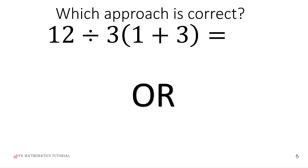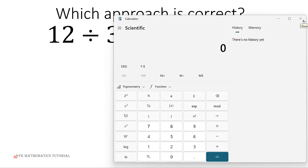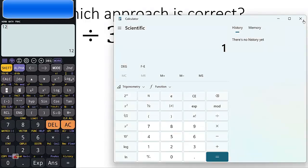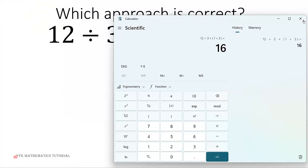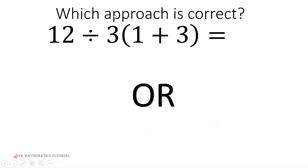I entered this numerical expression into two calculators. Which one is the correct answer? Two different approaches are being used here. Which one is correct?